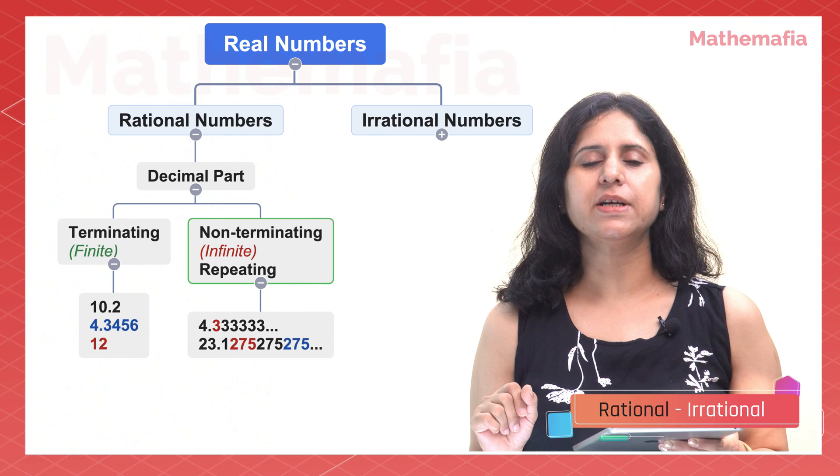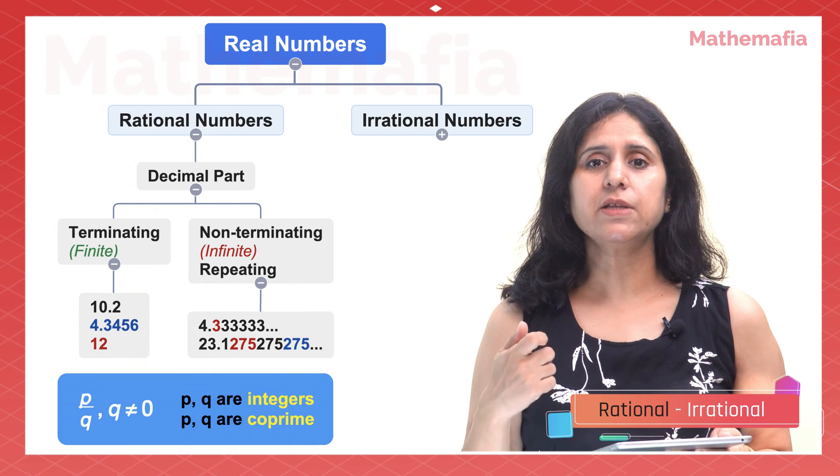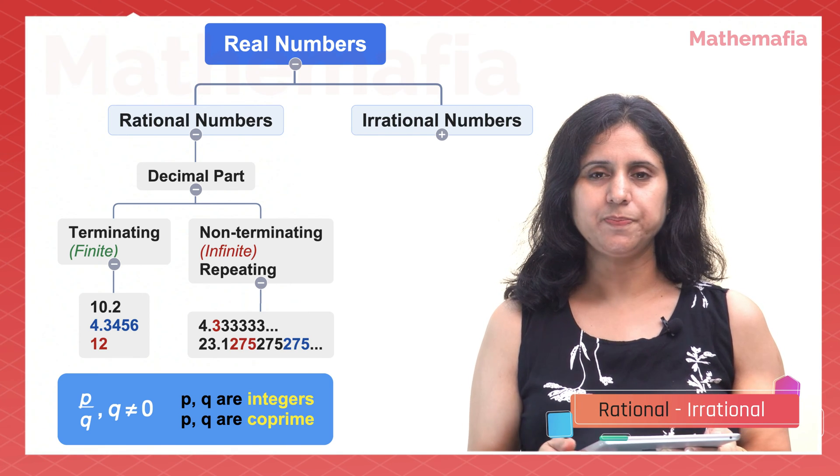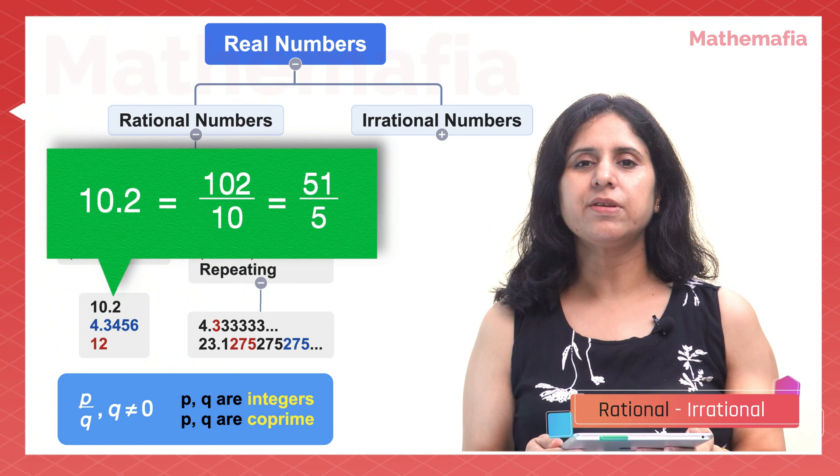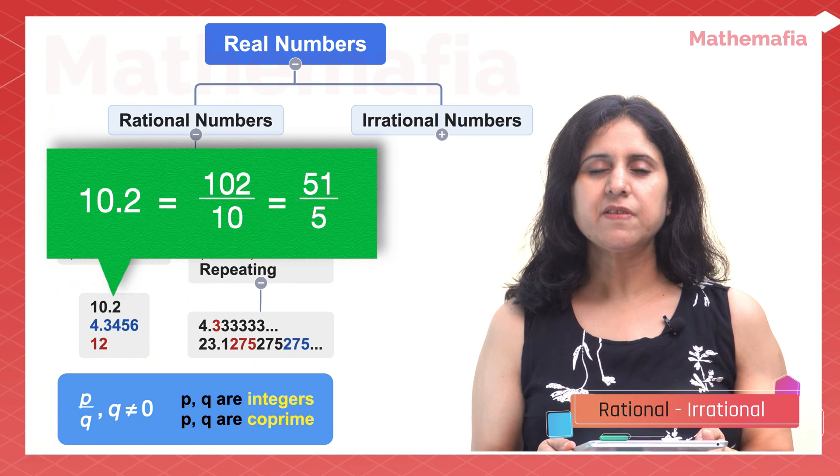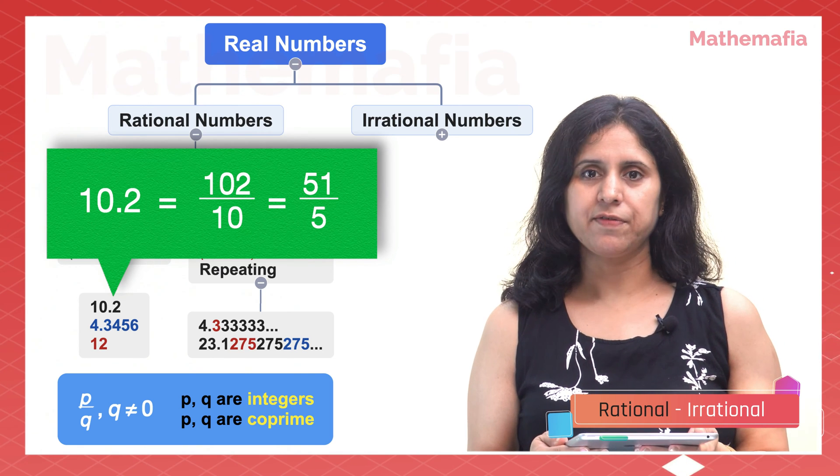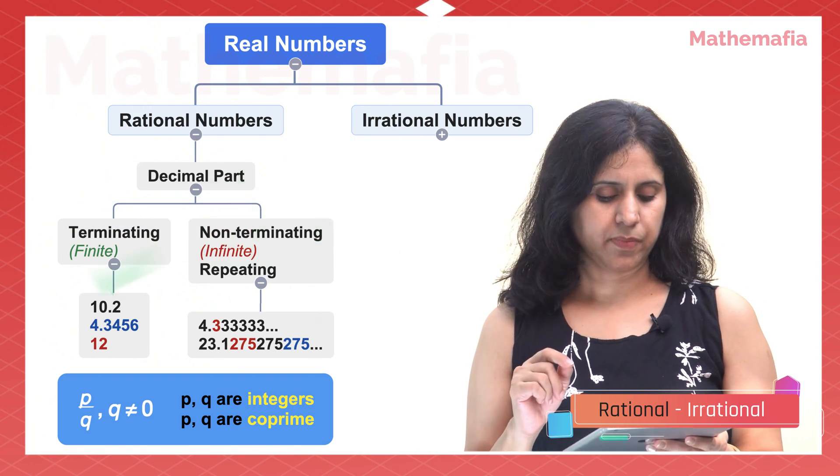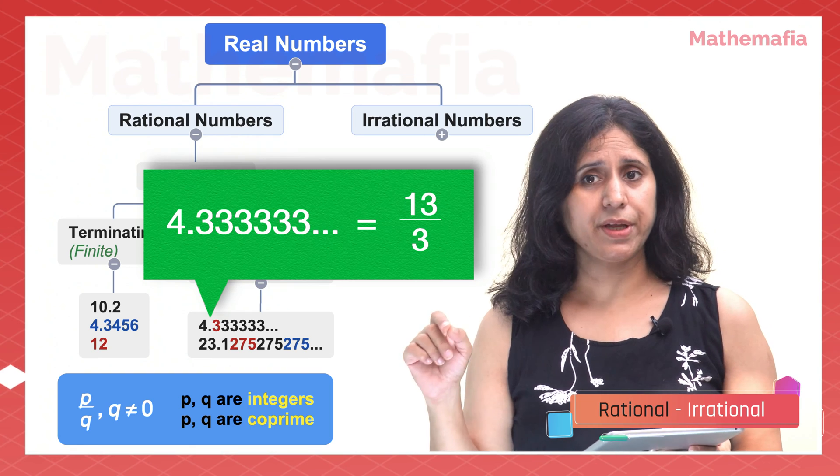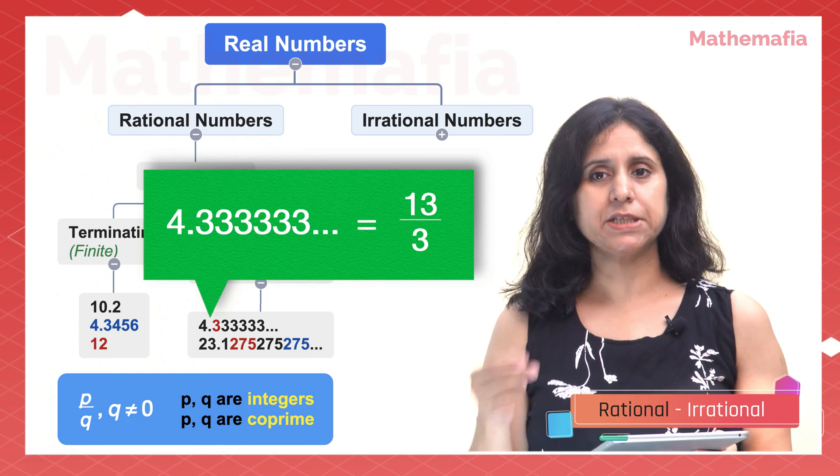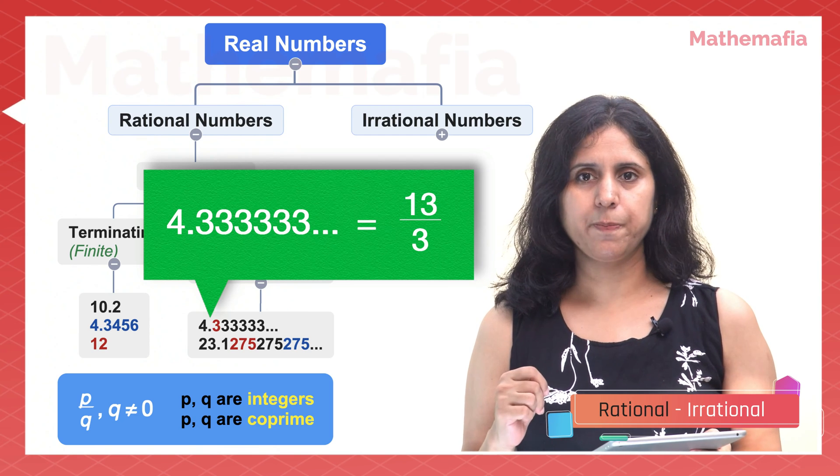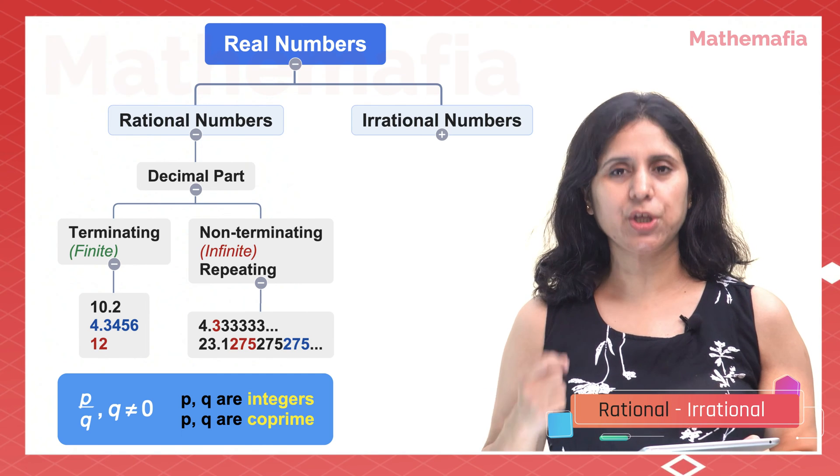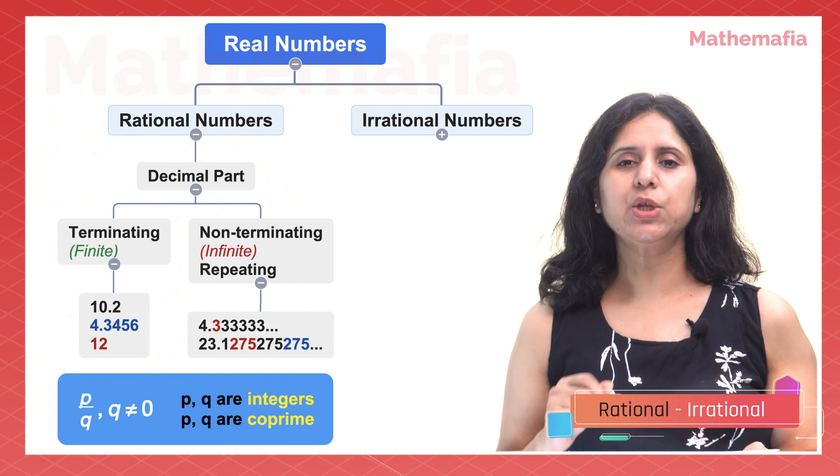One thing that's common in all these real numbers is that they can be written in the form p/q where p and q are co-prime integers and q is not equal to 0. For example, 10.2 can be written as 102/10 which simplifies to 51/5. Here 51 and 5 are co-prime and the denominator is not equal to 0. And 4.3333333 can be written as 13/3 which is again of the form p/q. So rational numbers are those numbers which can be written in the form p/q where p and q are co-prime integers and q is not equal to 0.